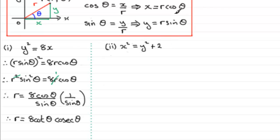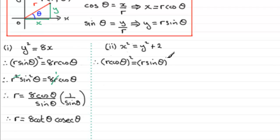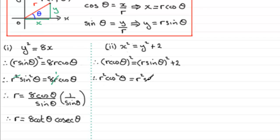For x we've got r cos theta, so we've got r cos theta all squared, equals y squared, which is r sine theta all squared, and then we add the 2. Expanding the brackets, we've got r squared cos squared theta equals r squared sine squared theta plus 2.